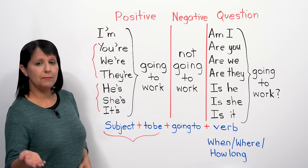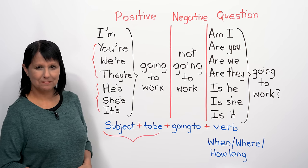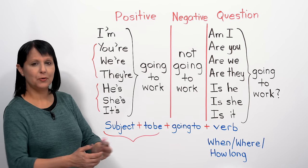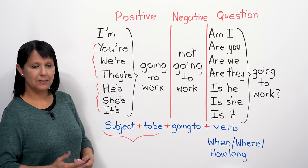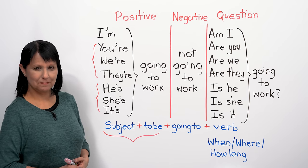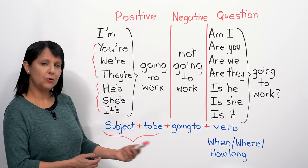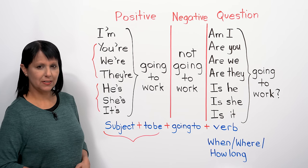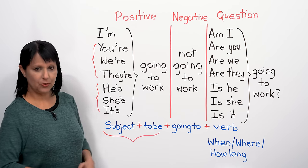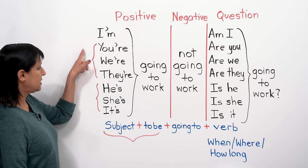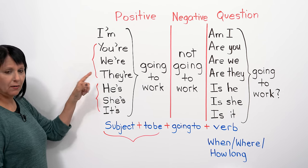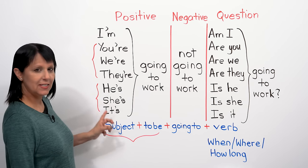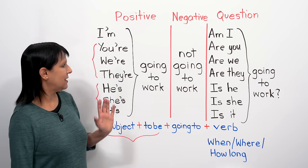Say it after me: I'm going to work. You're going to work. We're going to work. They're going to work. He's going to work, she's going to work, and it's going to work. You'll see that 'you're,' 'we're,' 'they're' are contractions for 'you are,' 'we are,' 'they are,' and 'he's,' 'she's,' 'it's' are contractions for 'he is,' 'she is,' 'it is.'